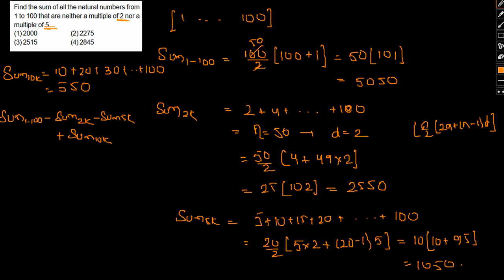This equals 5050 minus 2550 minus 1050 plus 550. That would be 3000 minus 650, which equals 2000. So option A is our answer.